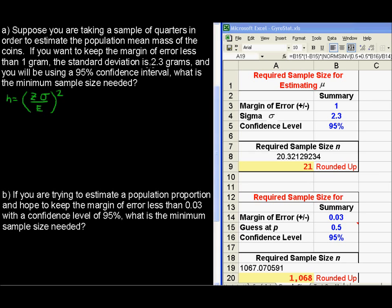We've got the standard deviation, 2.3 grams. We've got the margin of error, that's 1 gram. But what we don't have now is z.